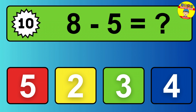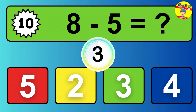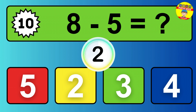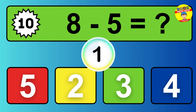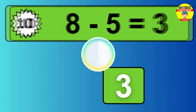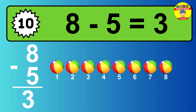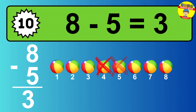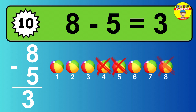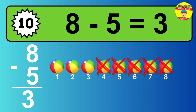Question ten. Eight minus five equals what? So the answer is, eight minus five is three. Let's count it. One, two, three.